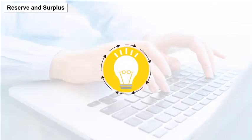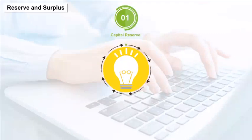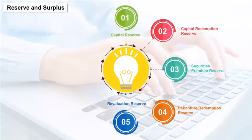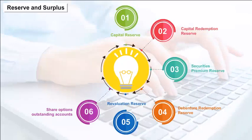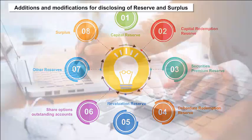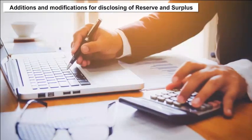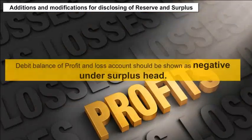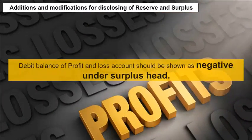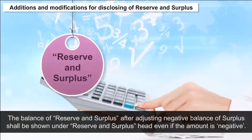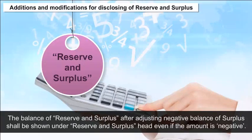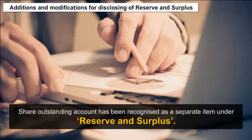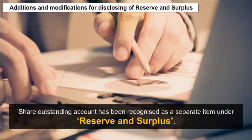Reserve and surplus can be classified as: capital reserve, capital redemption reserve, securities premium reserve, debenture redemption reserve, revaluation reserve, share options outstanding accounts, other reserves, and surplus. Additions and modifications for disclosing reserve and surplus: a reserve represented by earmarked investments shall be termed as a fund; debit balance of profit and loss account should be shown as negative under surplus head; the balance of reserve and surplus after adjusting negative balance of surplus shall be shown under reserve and surplus head even if the amount is negative; and share options outstanding account has been recognized as a separate item under reserve and surplus.